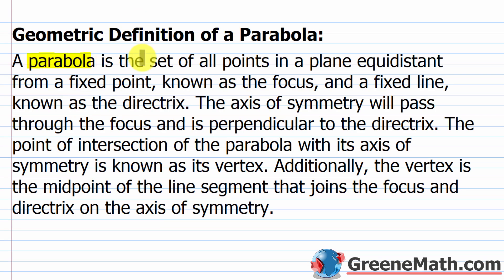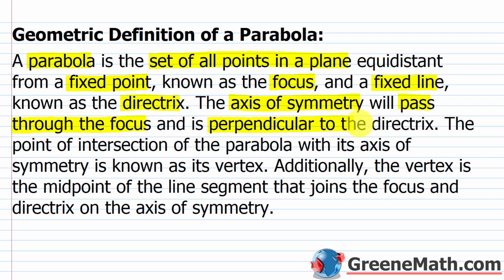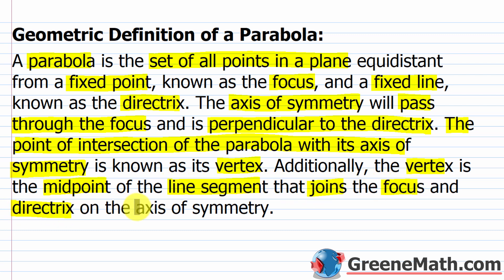A parabola is the set of all points in a plane equidistant — meaning the same distance — from a fixed point known as the focus and a fixed line known as the directrix. The axis of symmetry, which cuts the parabola into two equal halves, passes through the focus and is perpendicular to the directrix. The point of intersection of the parabola with its axis of symmetry is the vertex, and the vertex is the midpoint of the line segment joining the focus and the directrix on the axis of symmetry.